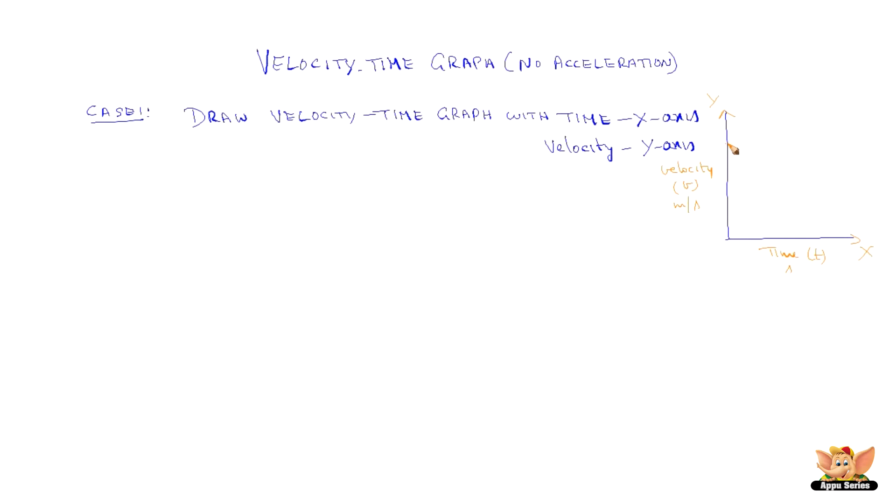No acceleration means the speed is constant. So when we draw a curve with a speed from O as OA, then it will be a straight line parallel to x-axis.